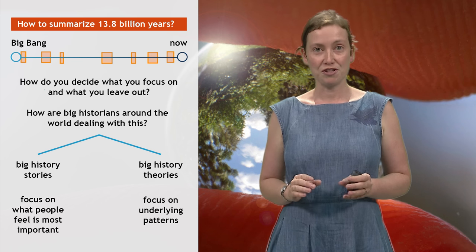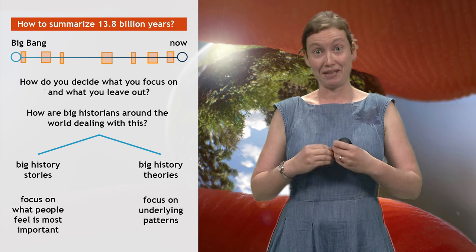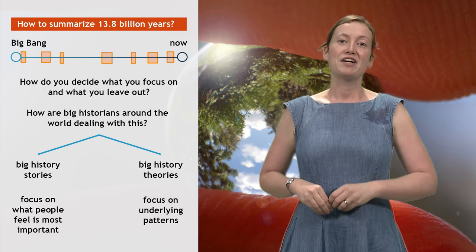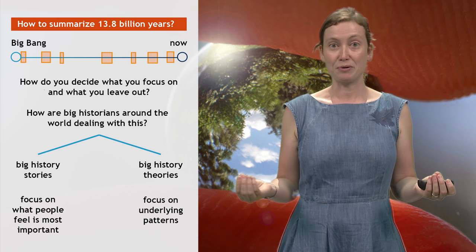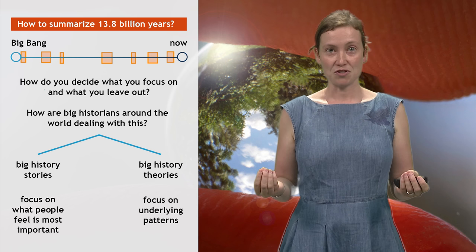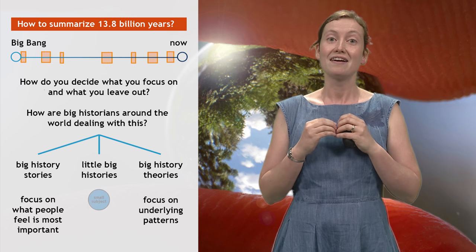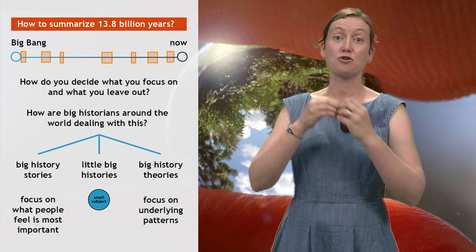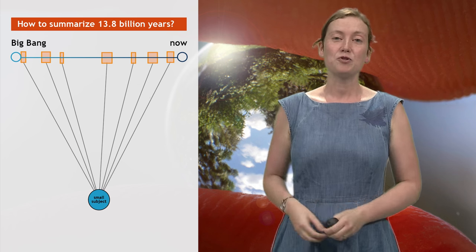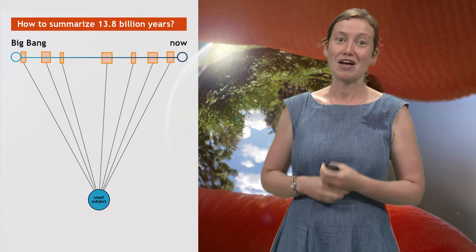A third approach, first developed by my colleague Jonathan Markley and me, falls somewhere in between the big history stories and the big history theories. It consists of writing little big histories, in which you take a relatively small subject and link that to aspects of all major phases in big history, in order to generate some new questions and ideas about the subject.